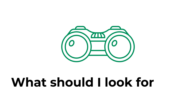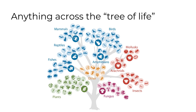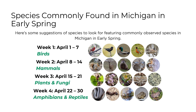Now we will discuss what to look for during the BioBlitz. For the 2024 MSU Science Festival BioBlitz, you can look for anything across the tree of life. There are so many organisms to discover, from plants, fishes, reptiles, mammals, birds, amphibians, arachnids, insects, mollusks, fungus, and more. Here are some species to look for featuring commonly observed species in Michigan in early spring, including birds, mammals, plants and fungi, amphibians, and reptiles. Watch our social media where we will be sharing weekly suggestions featuring species in these groups. A list is also available on the BioBlitz resource link tree.